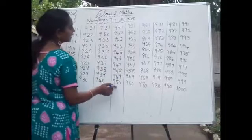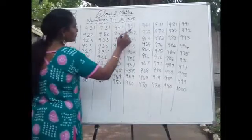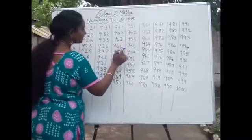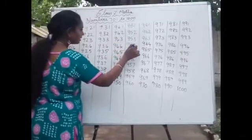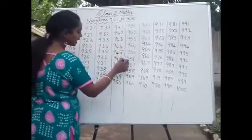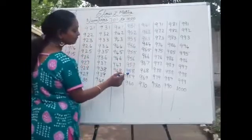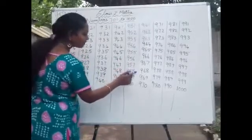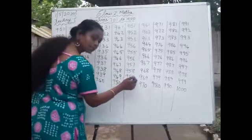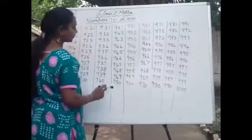After 950: 951, 952, 953, 954, 955, 956, 957, 958, 959, 960.